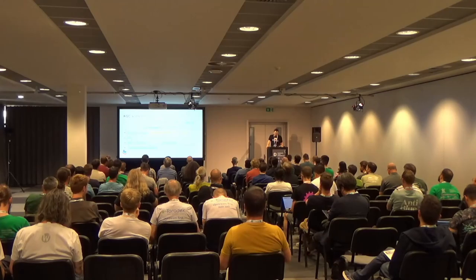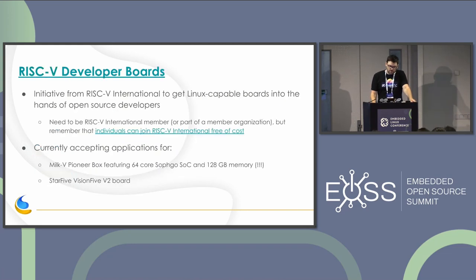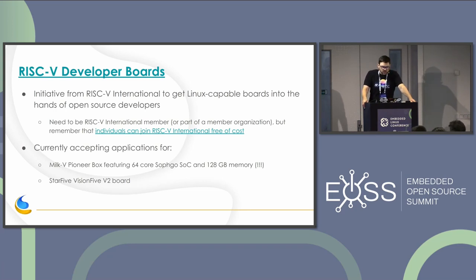Since it's the Embedded Linux Conference, a lot of us probably like dev boards. There is a program from RISC-V International called RISC-V Developer Boards, with the goal of getting dev boards into open source developers' hands. This has been going on for about two years now. There are two exciting things you can apply for right now: a 64-core board, and a four-core board called the Vision Five 2.